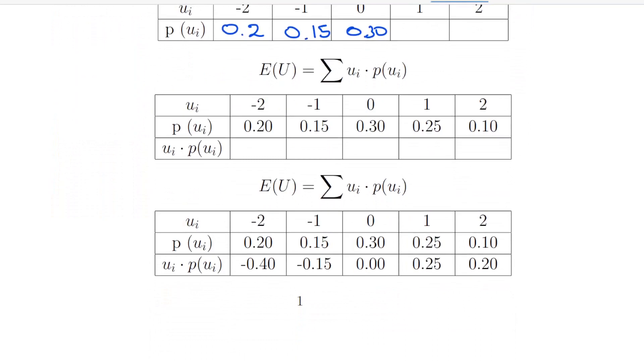To calculate the expected value of U, we multiply each value of U times the probability of that value. The probability of U equal to 1 equals 0.25 and the probability of 2 equals 0.10. So going through each one of them: minus 2 times 0.20 is minus 0.40, minus 1 times 0.15 is minus 0.15, and so on.